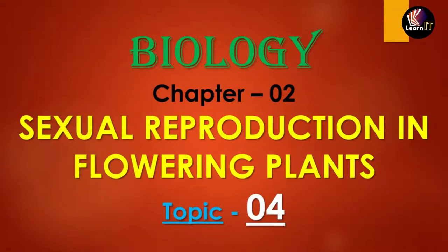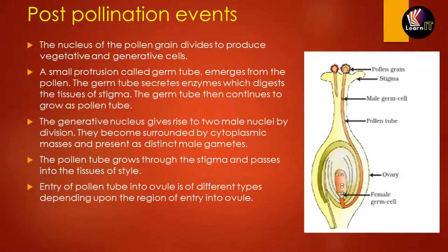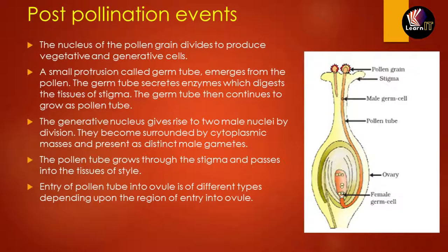Hello friends, welcome to one more new video of Learn It. Today we'll be taking topic 4 of chapter 2: Sexual Reproduction in Flowering Plants. We have already discussed the male gametophyte and the female gametophyte — the formation of pollen grains in males and the formation of the ovule in females. Now let us talk about the post-pollination event — what will happen after pollination has been completed.